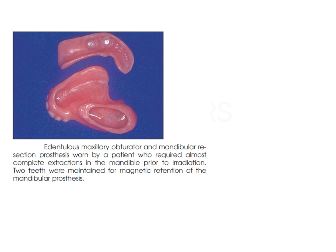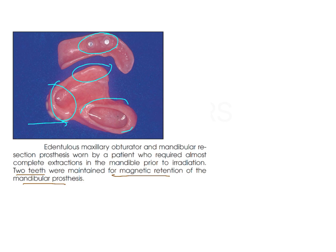Here you have an example of a maxillary obturator which is completely acrylic. It takes support from tissue undercuts, engaging all areas where retention can be obtained in the mouth. There are also two magnetic retention attachments taking support from two teeth preserved before resection. You can use copings on existing teeth, provide attachments on top, and use magnets to support the restoration - so these are magnet-retained and anatomically retained restorations.